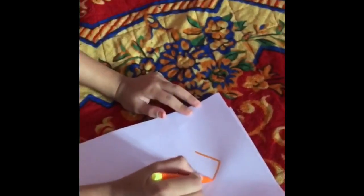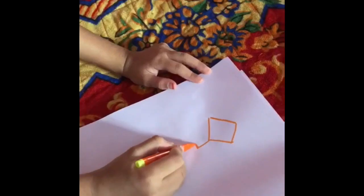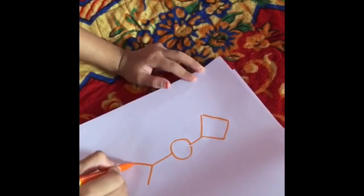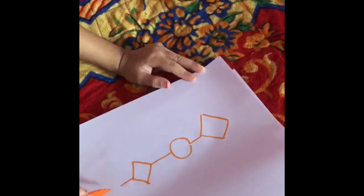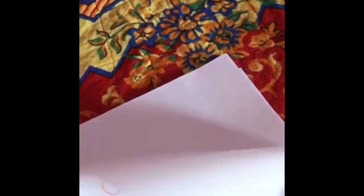First I'm going to draw a diamond, then a line, then a circle, then a line, then a diamond, then a line, then a circle. Now for this you need to know your two times tables.